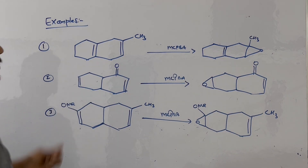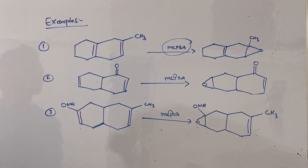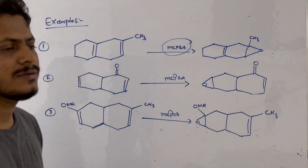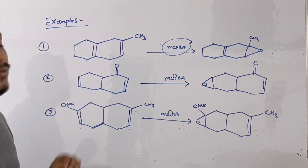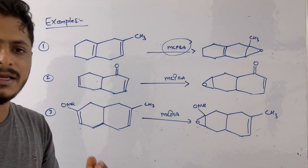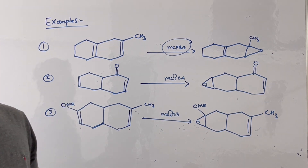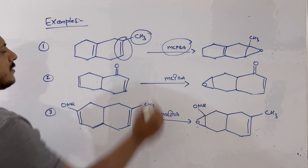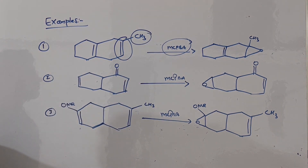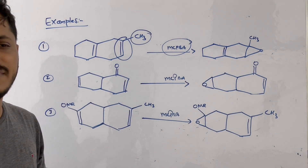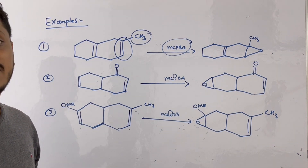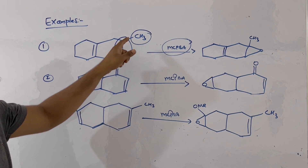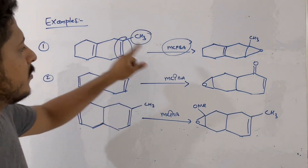Now let us discuss examples. The substrate is treated with mCPBA and has two alkenes. Among these two double bonds, the first alkene is more electron-rich because of the CH₃ group — it creates more electron density due to hyperconjugation. The more substituted alkene is more electron-rich due to hyperconjugation, so definitely this alkene will be epoxidized, giving this epoxide product.